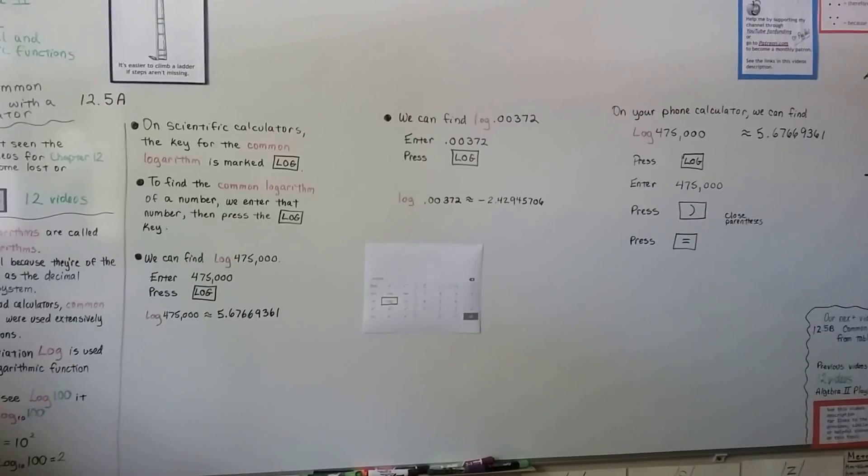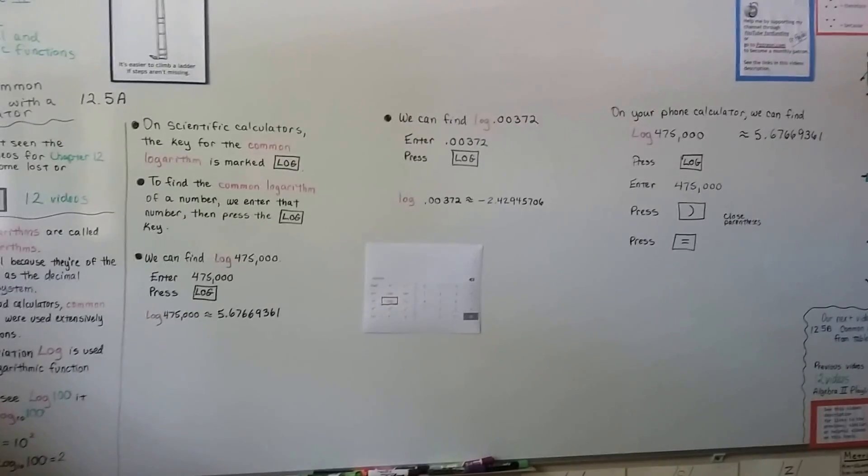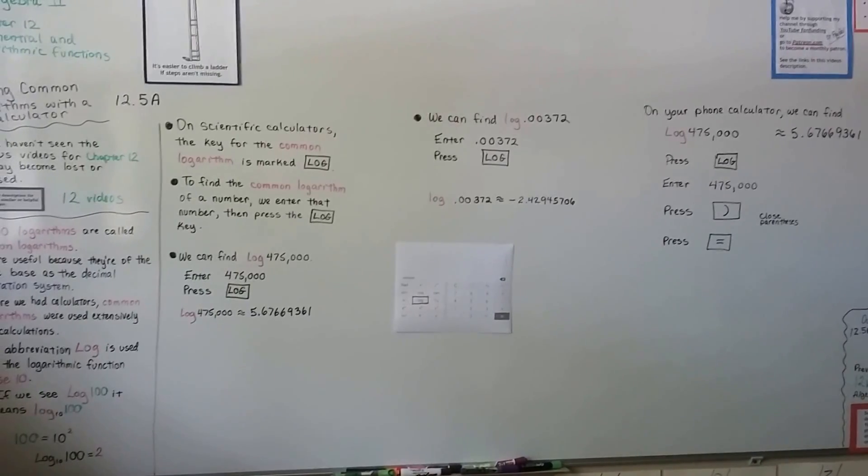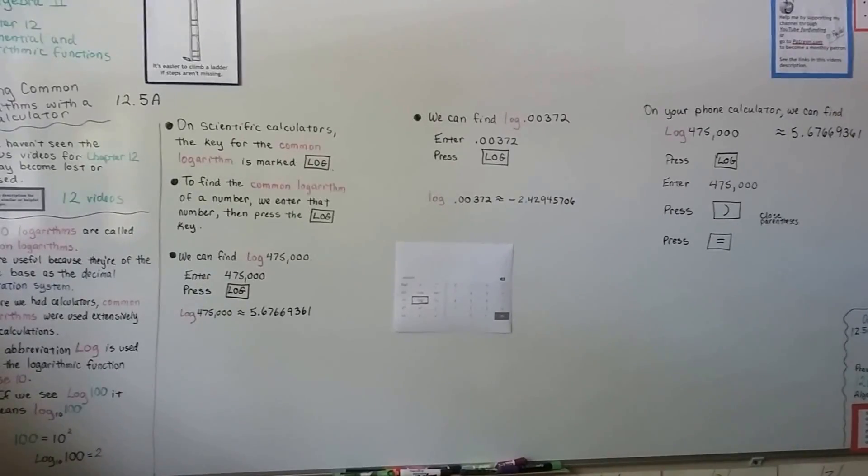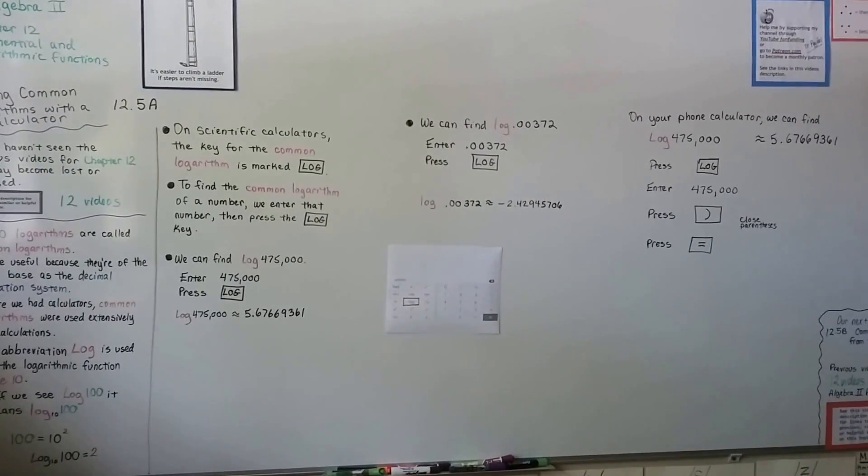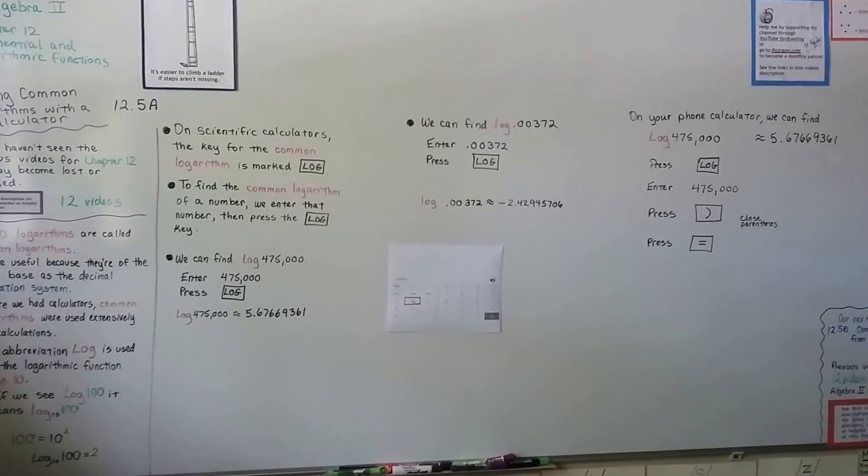We're going to talk about finding common logarithms from tables in the next video. That'll be 12.5b, and you can check out the previous 12 videos and a link to the Algebra 2 playlist in this video's description. Have a great day. Bye.